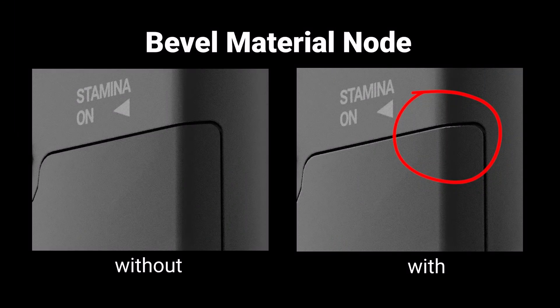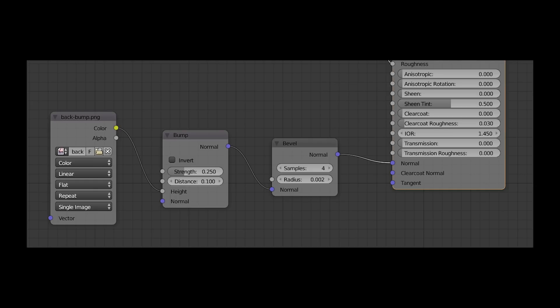The new bevel node is really awesome for hard surface models like this one. Of course you model the surface with real bevels, but with a tiny little bit of the bevel node effect on the material, all the hard cuts from the boolean operations suddenly catch the light and make the whole thing look that much more realistic. Because remember, there simply are no infinitely sharp edges in real life. It's really awesome and can be slapped onto any material, even daisy chained with bump maps.